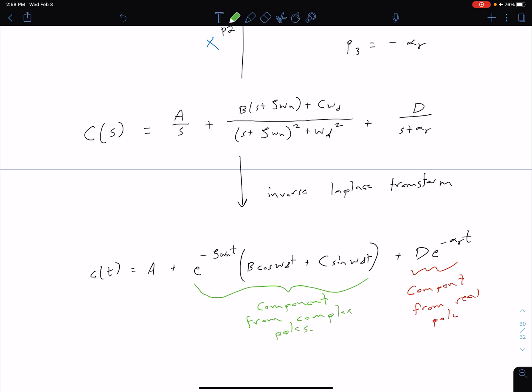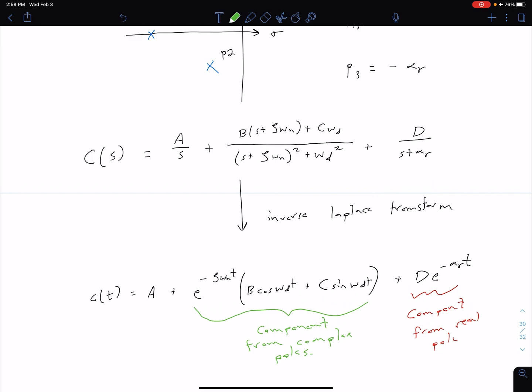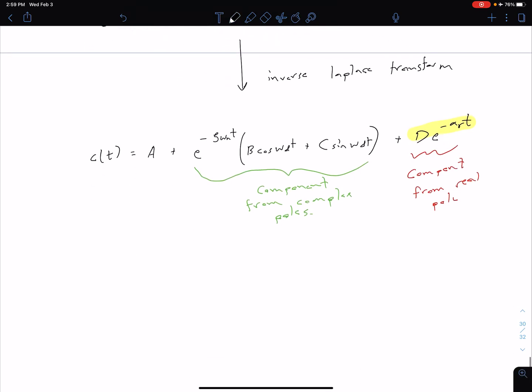We've kept everything really general. Notice we've not put any specific numbers for our αr, for our ζ, our ωn, any of that. This is just the general form. Of course the idea is if this third term is small enough compared to this term, then we can approximate this as a second order system. In general we can say that the larger that αr term is, the less effect of the real pole on the transient response of the system.